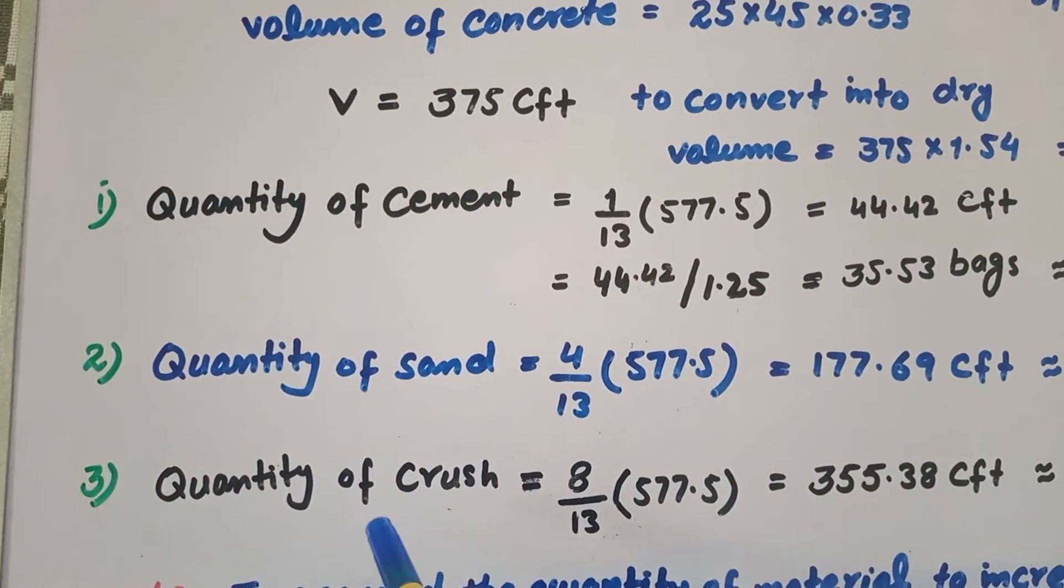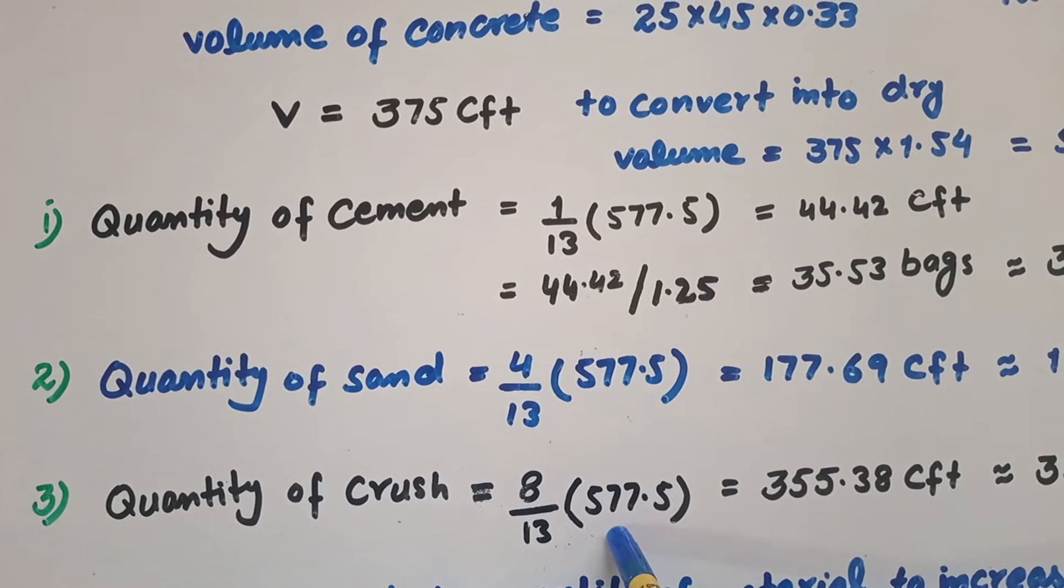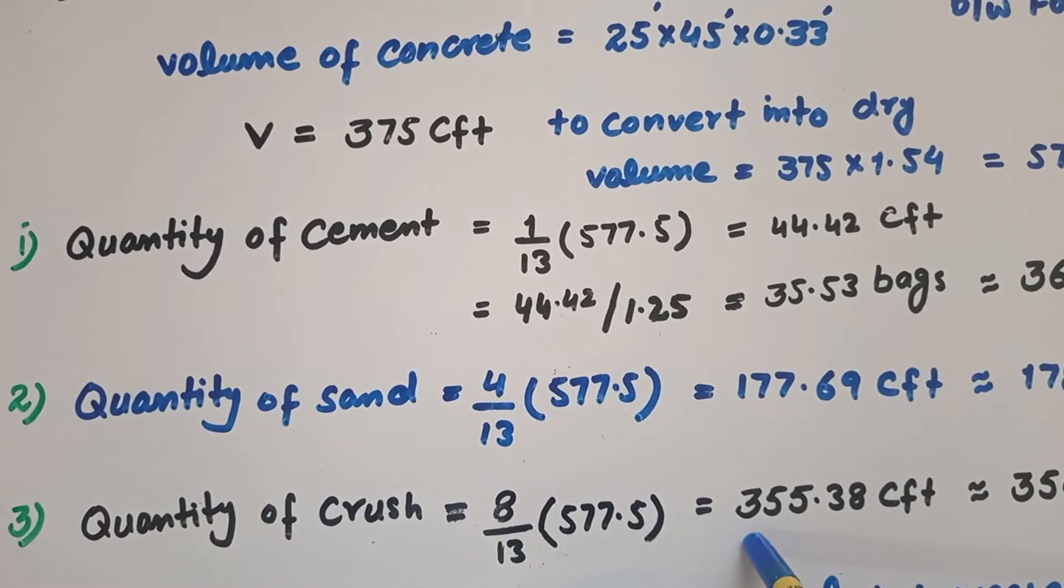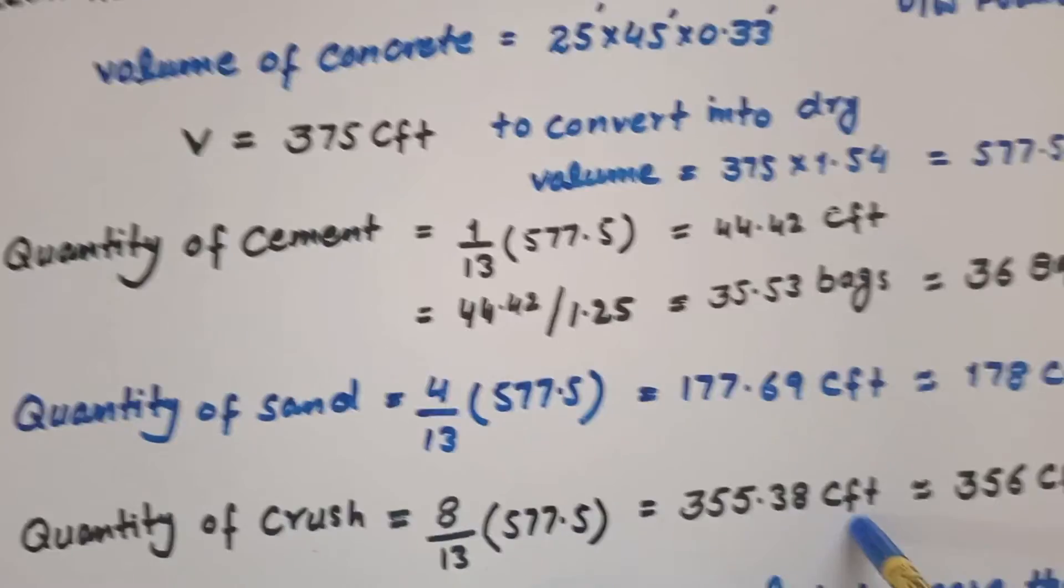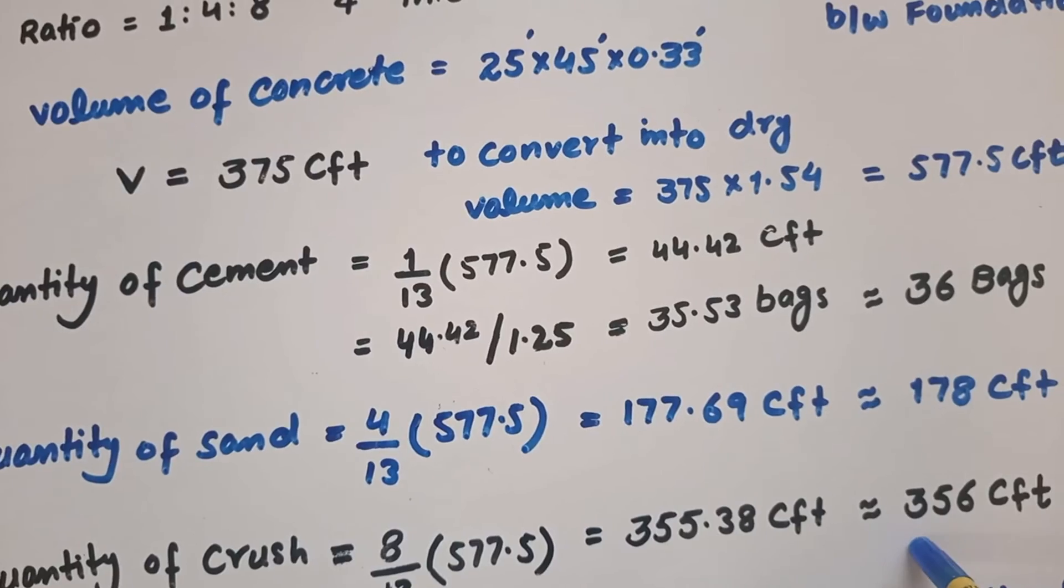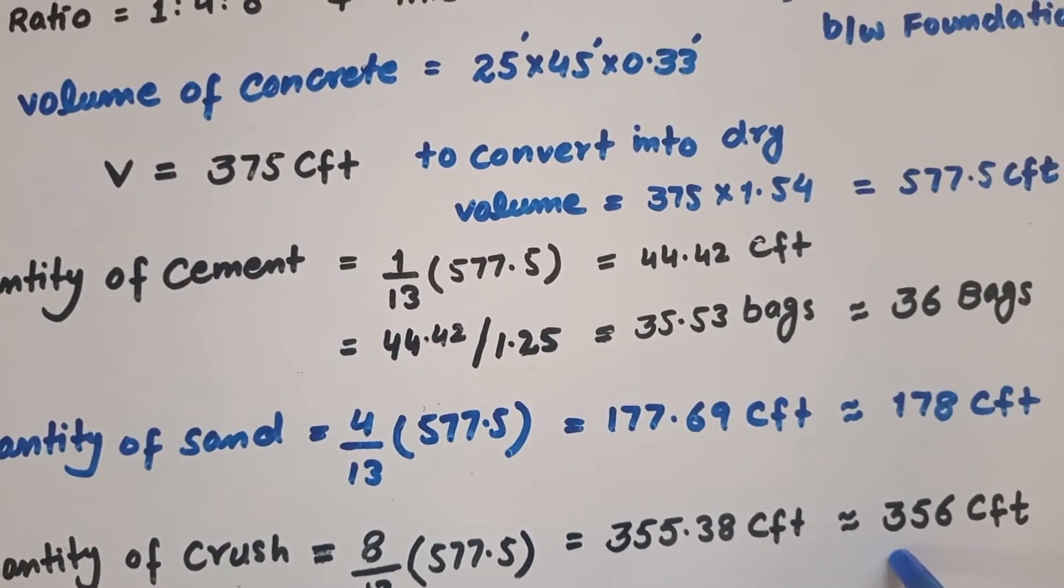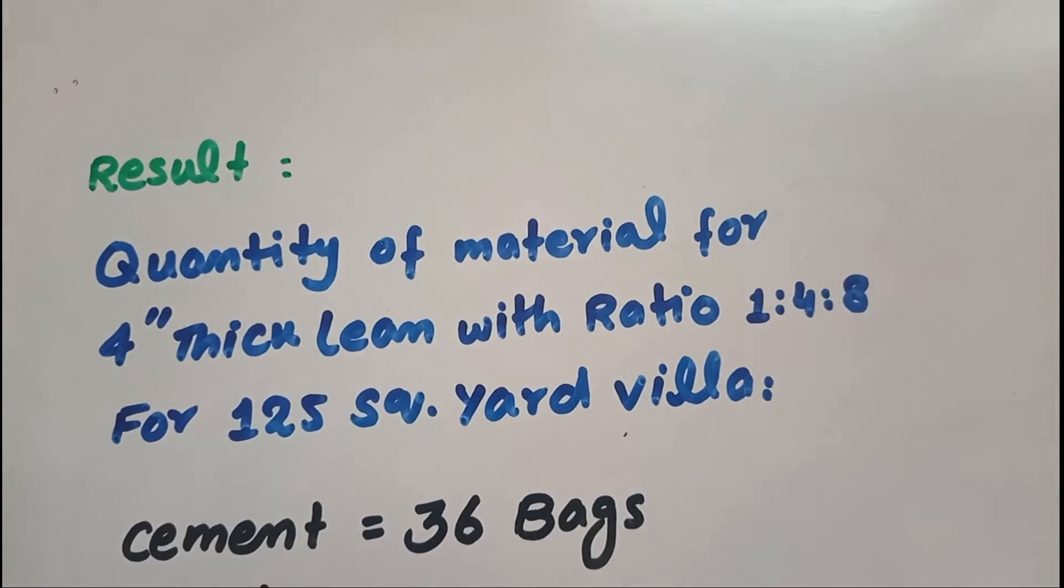Number three, quantity of crush: 8/13 × 577.5 equals 355.38 cubic feet after calculation, so round figure 356 cubic feet.